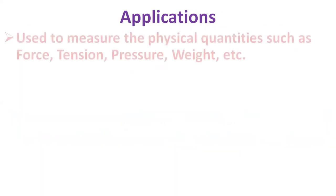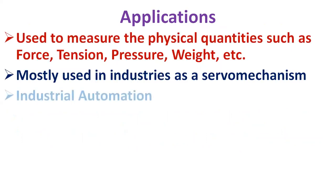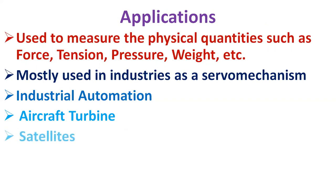The applications of LVDT: it is used to measure the physical quantities such as force, tension, pressure, weight, etc. It is used to convert the displacement to the corresponding electrical voltage signal. It is mostly used in industries as well as in servo mechanism. It is also used in industrial automation, aircrafts, turbines, satellites, hydraulics, etc.